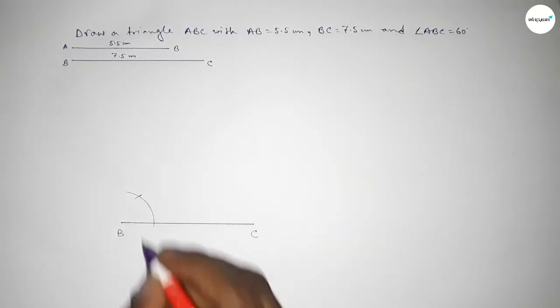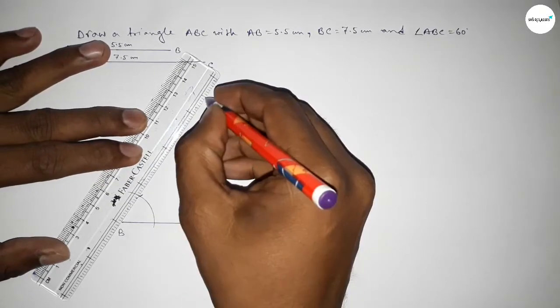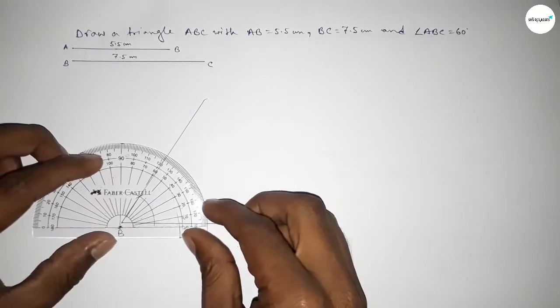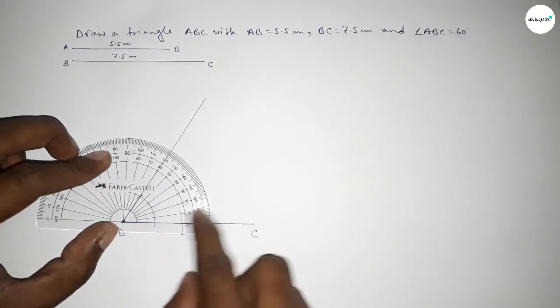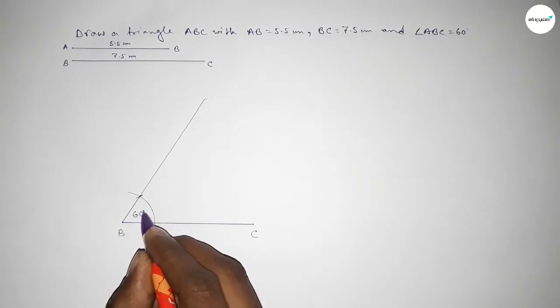So both the curves intersect at a point. Now joining this to get here 60 degree angle. Now checking, so this is perfectly a 60 degree angle.